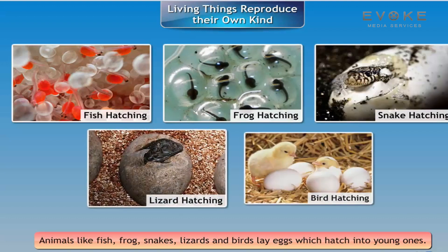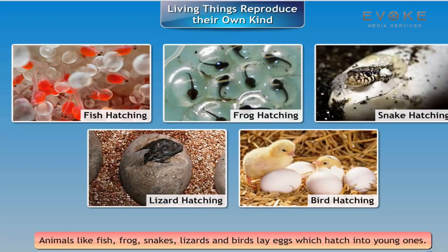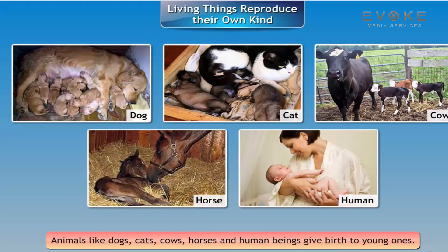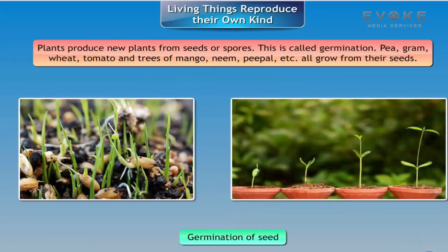Living things reproduce their own kind. Animals like fish, frog, snakes, lizards, and birds lay eggs which hatch into young ones. Animals like dogs, cats, cows, horses, and human beings give birth to young ones. Plants produce new plants from seeds or spores. This is called germination.